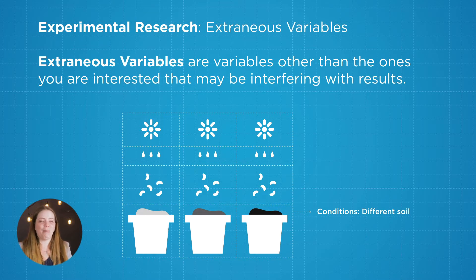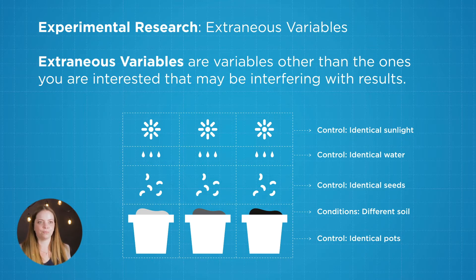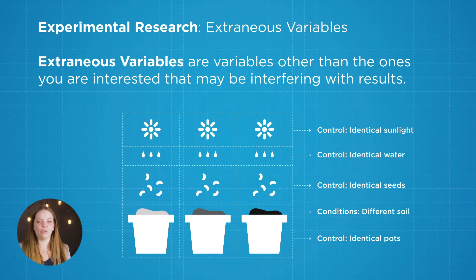We're basically trying to control for as many of those variables that we know can affect the study. Water and sunlight are going to affect plant growth, so we're going to keep those as similar as possible across all the different conditions of soil. Remember that our two main variables are plant growth and soil type, and extraneous variables are all the other variables that could affect the relationship between plant growth and soil that are not plant growth and soil.